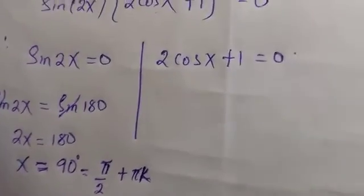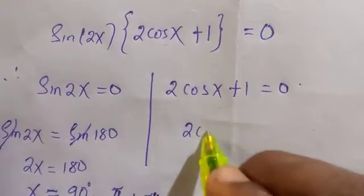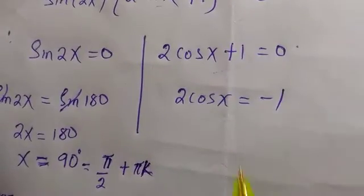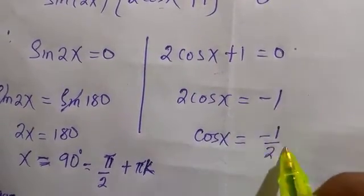And again, to test for the value of x in this case as well, we transfer 1 to the other side. We get 2cos(x) = -1, and dividing by 2, we have cos(x) = -1/2.